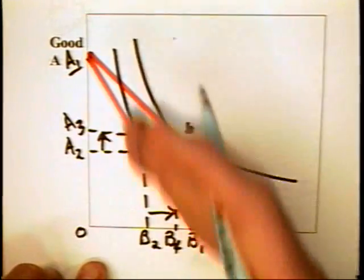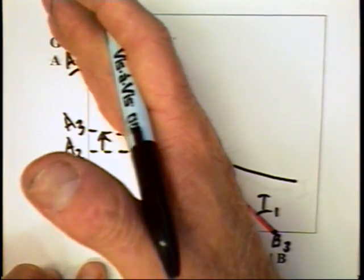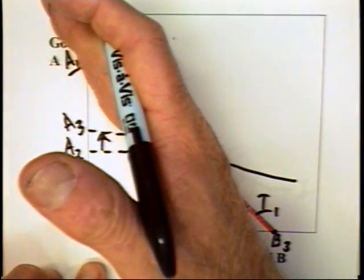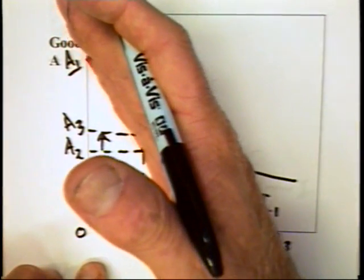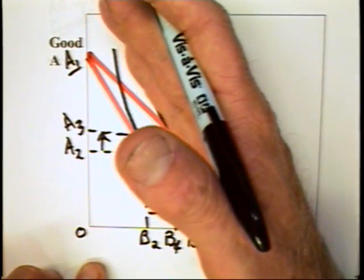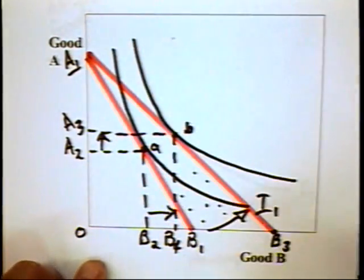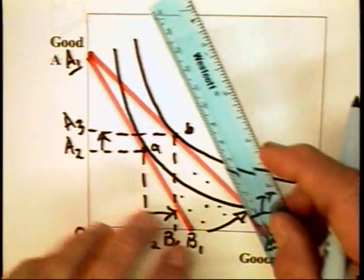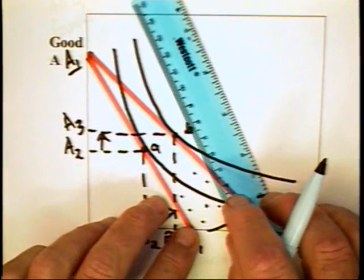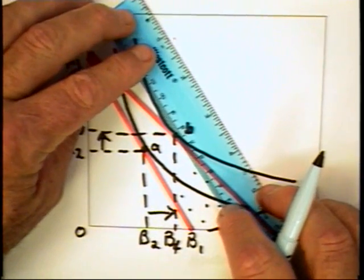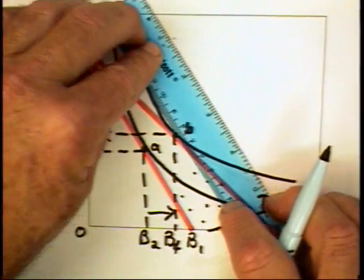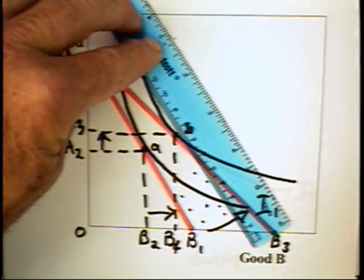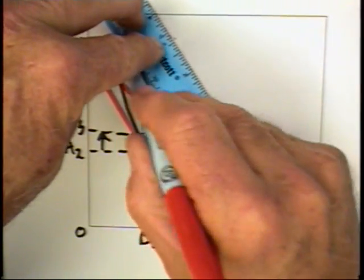Now, an increase in income for consumers would mean that the prices of A and B would remain undisturbed. It would mean therefore that the slope of the budget line would remain at this slope and the budget line would move out. Now, suppose that we gave people enough income so that they could in fact buy combination B. If they could buy combination B, and I'm trying to draw this curve parallel to that line, then the budget line would look something like this.